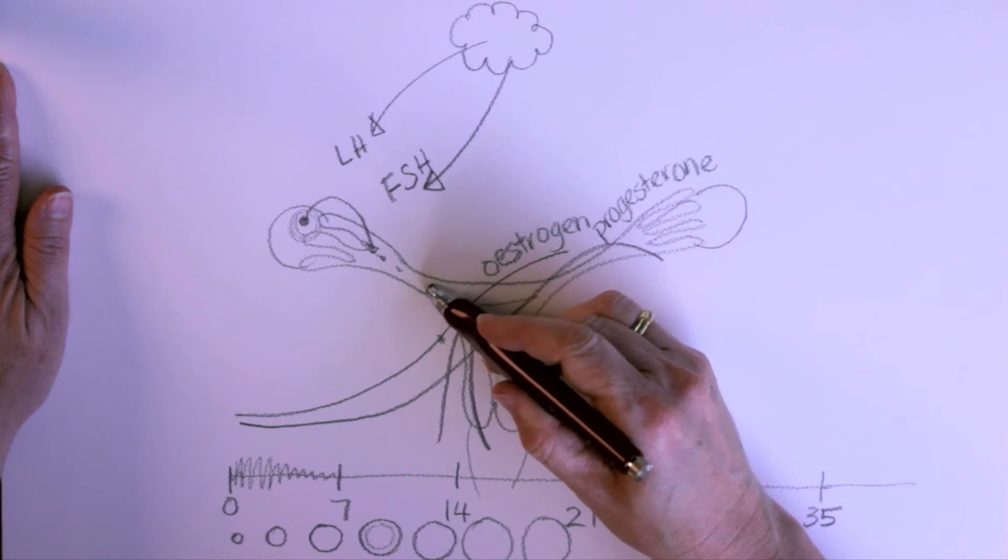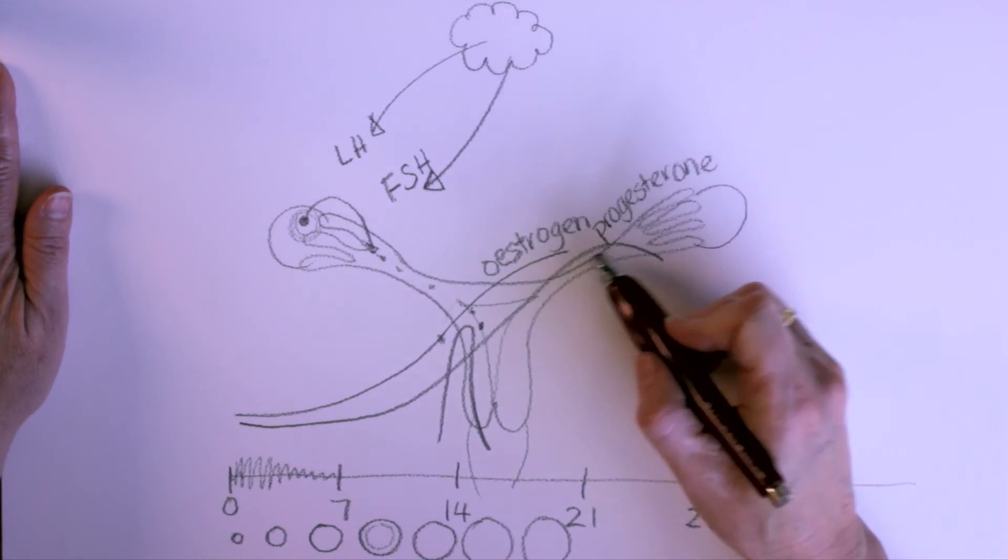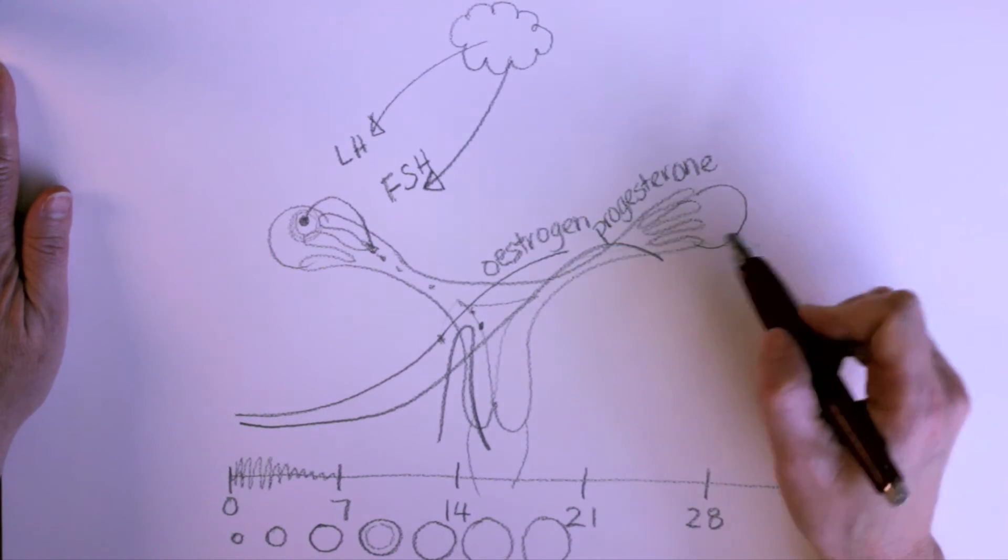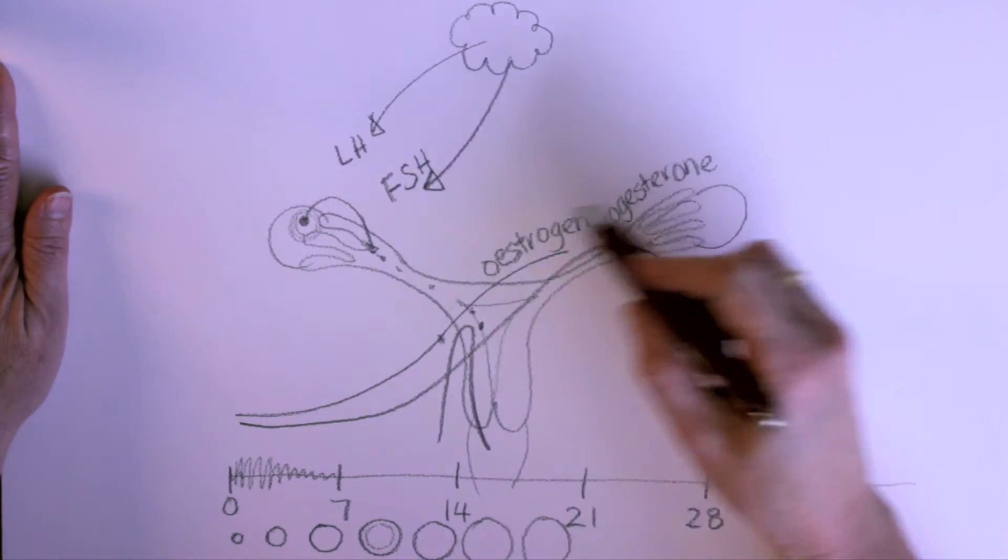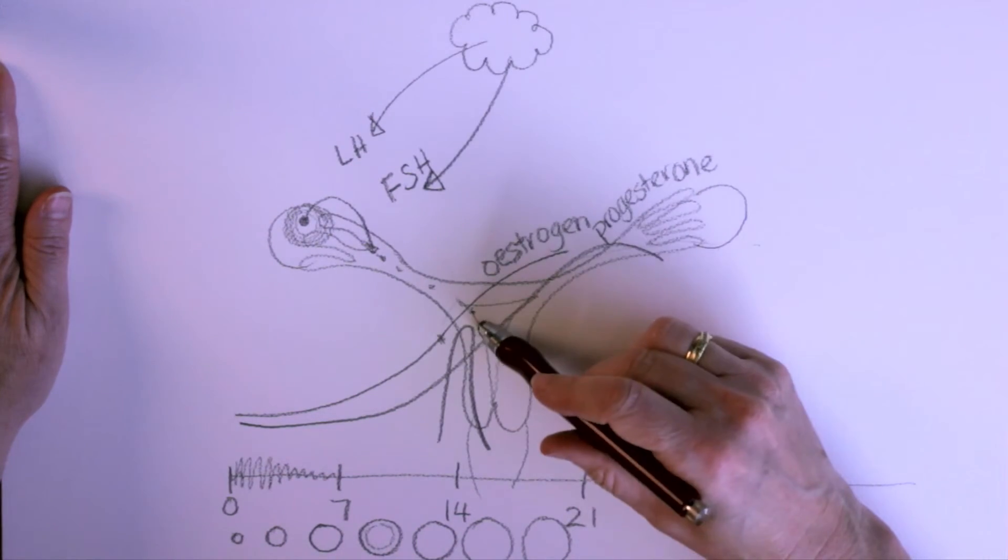So then your egg carries on down. If it meets a sperm and implants, then these hormones will carry on, because the follicle continues to get a little bit bigger and will keep the pregnancy going.